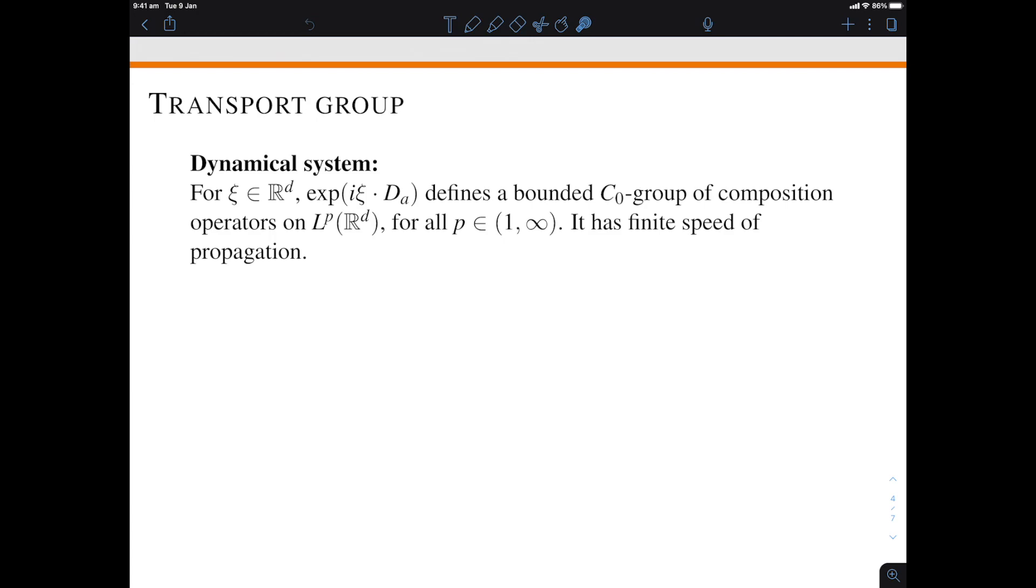So to finish, I'd like to very briefly show you some of the other ideas that appear in the paper. Now the first one is using transference of groups of operators to move from the Fourier multipliers to the operators that we need to analyze with non-constant but Lipschitz continuous coefficients. So the first point is that you can study an ordinary differential equation or a system of such equations involving the a_j coefficients and from that you will get that the Dirac operator D_A generates a bounded group of composition operators on L^p for all p with finite speed of propagation.